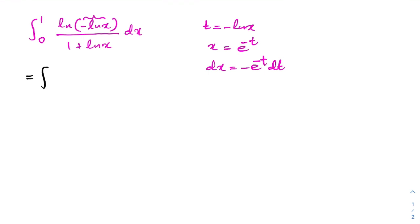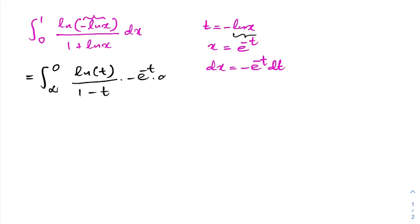Plugging into the integral: when x approaches 0, t approaches infinity; when x approaches 1, t approaches 0. We have ln(-ln(x)) = t, and 1 + ln(x) = 1 - t. Changing the limits to 0 to infinity, the minus sign cancels, giving the integral from 0 to infinity of e^(-t) · ln(t) / (1 - t) dt.